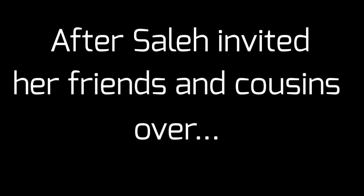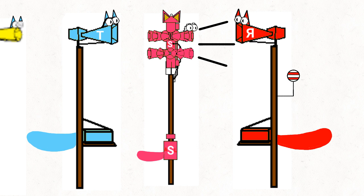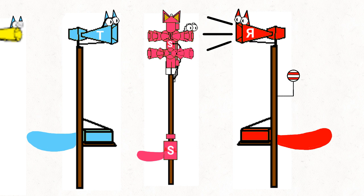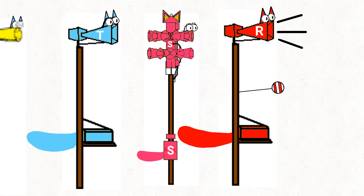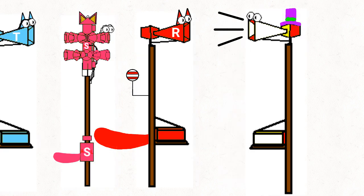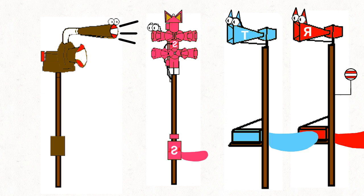After Sala invited her friends and cousins over. Hey, guys. We also got a clown in the party. No worries, Sala. I have a clown here. Say hello to Funny Bone. Hey, guys. I'm Funny Bone. Oh, yeah? I have a clown, too. Say hello to Goof Ball. Hey, guys. I'm Goof Ball.